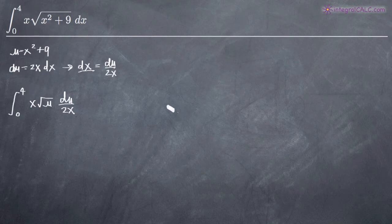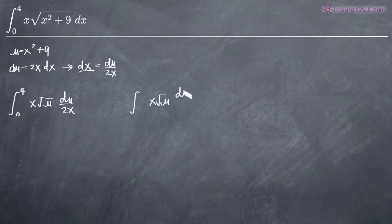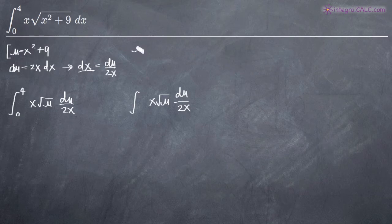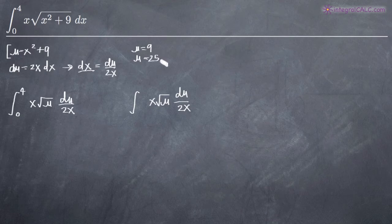Let's actually go ahead and solve it both ways. I'm going to put 0 to 4 on one integral, and then we'll do another integral where we change our limits of integration to be related to u. In order to change our limits of integration with respect to u, we plug each limit into our equation for u. When we plug in 0, we get u equals 0 squared plus 9, which is 9. When we plug in 4, we get u equals 16 plus 9, which is 25. So those are our new limits of integration.